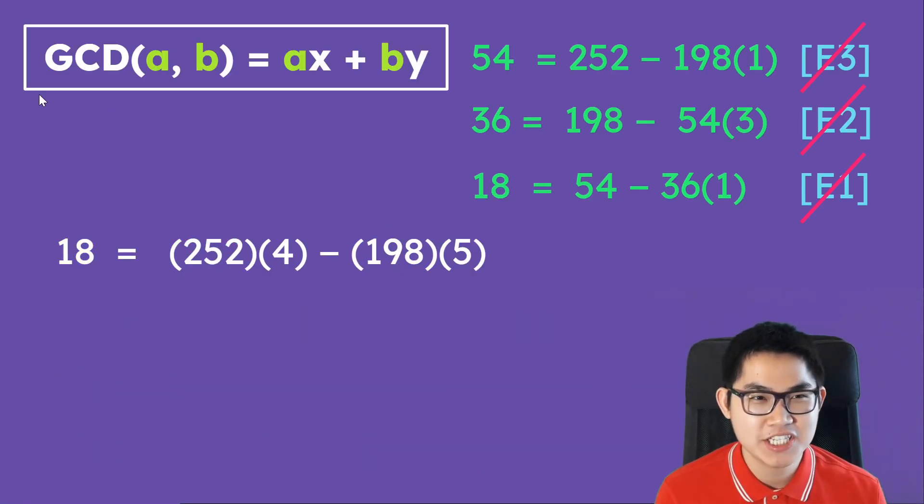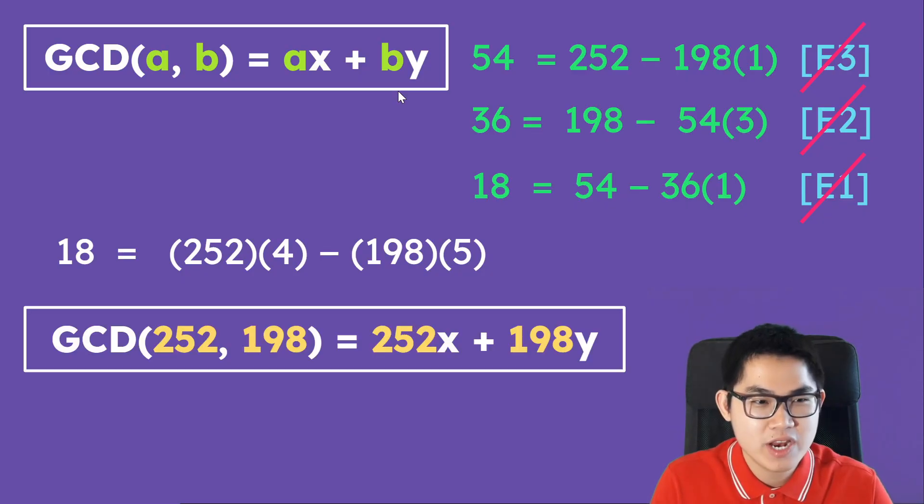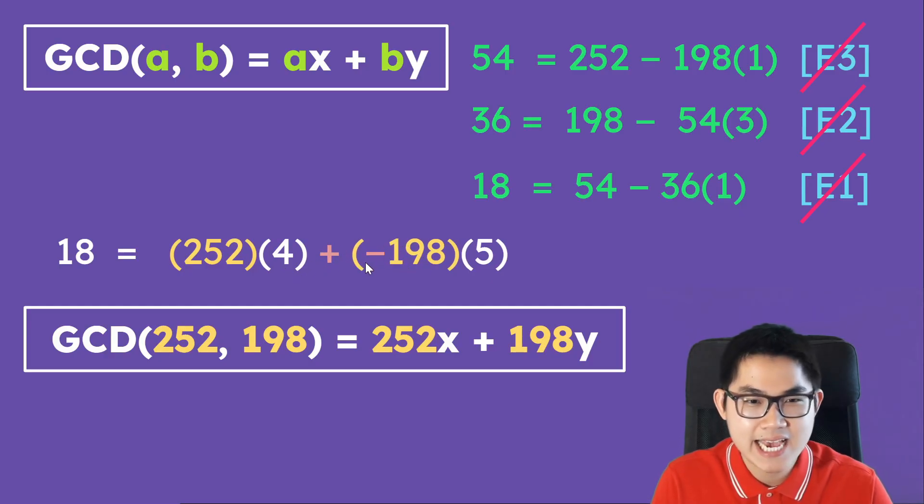If you remember, this was the equation that I introduced at the very beginning. And we know that the GCD of 252 and 198 is going to be 18. And then here we have 252 times x plus 198 times y. So if you guess it, x is going to be 4. And then how about y? Well, if you notice, here is a plus sign. So we have to change this to a plus sign first. We can bring this minus sign into the 198. So it's the same as plus negative 198 times 5. You can totally do that. And then you notice that 198 has to be a positive number. Here it is a negative number. So you can bring the negative sign into the number 5. And now it is in the form that we want. So y is going to be negative 5.